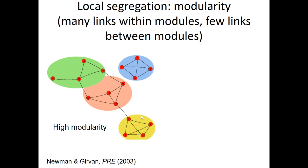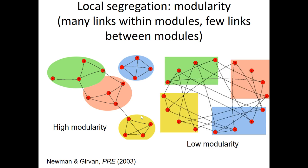Another measure of local segregation is modularity. The concept is that a network is modular — comprised of sub-networks that are more or less isolated, with many links within modules and few links between modules. A modular network has a much higher within-module edge probability than between-module probability. A network with roughly the same number of edges but low modularity would have similar probability of edges within or between groups. There are several measures to define modularity.